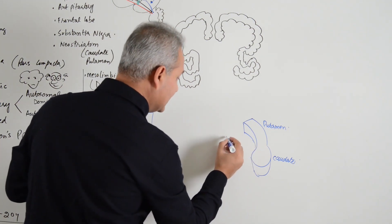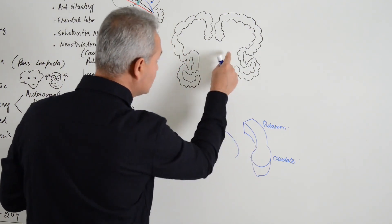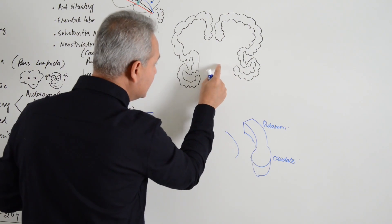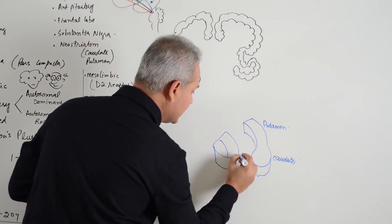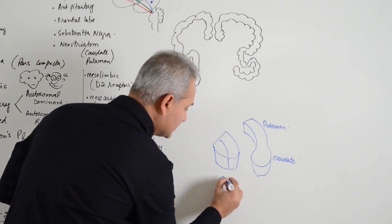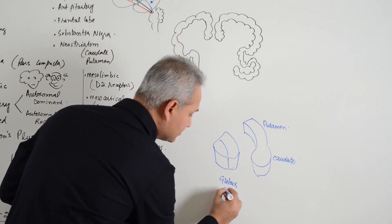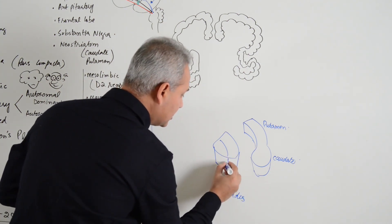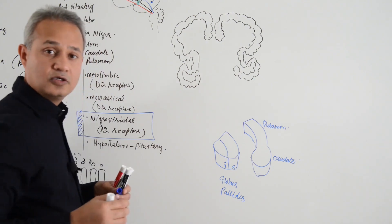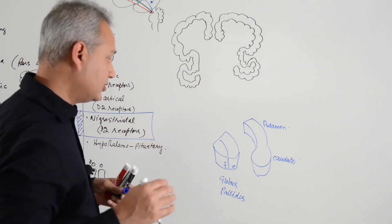Now putamen, caudate, then medially here putamen and caudate are present. Medially here is the globus pallidus which is seen as globus pallidus interna and externa.